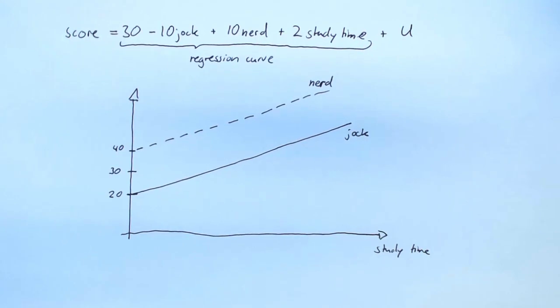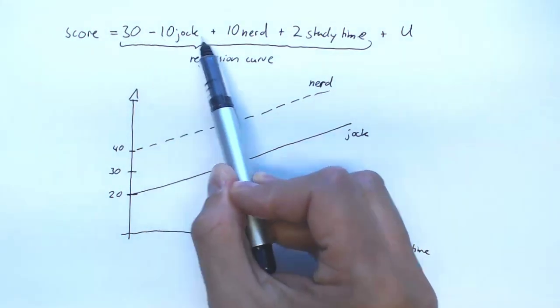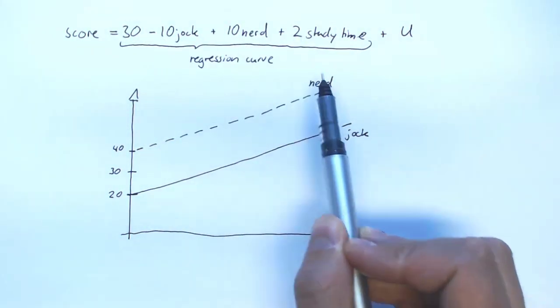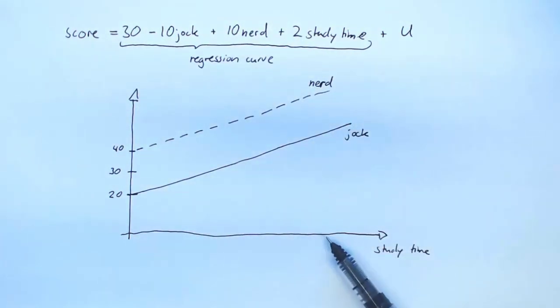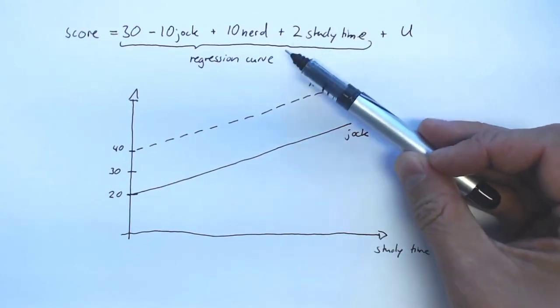Now the important thing to realize is that we can play around with these numbers without actually changing the picture that we draw. In other words, we can change these numbers without changing the regression curve.